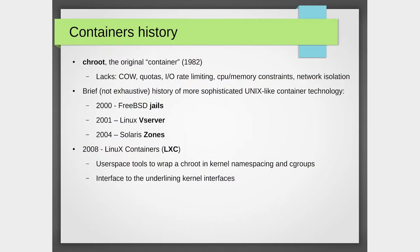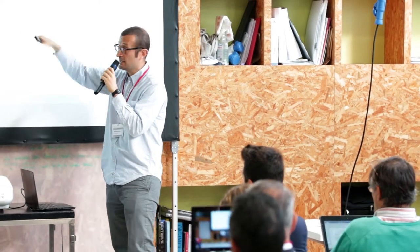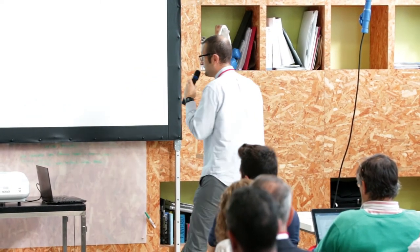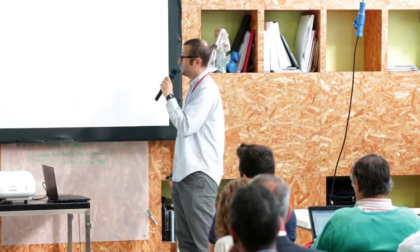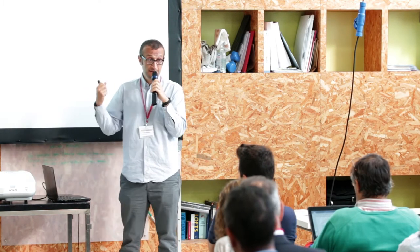A little bit of history. In 1982, chroot was probably the first container — very rudimentary, lacking copy-on-write, quotas, and limitations on I/O and CPU. Then there were more sophisticated container technologies over the years, until 2008 when LXC, Linux Containers, was issued. That's when user-space tools were given to users to wrap a chroot using kernel features of namespacing and cgroups.